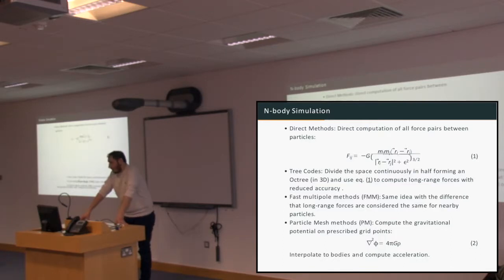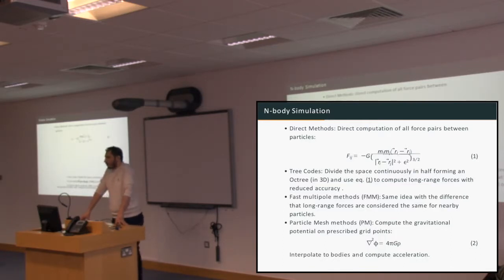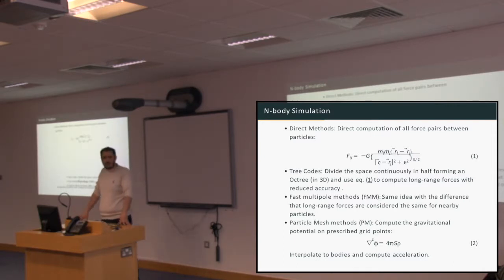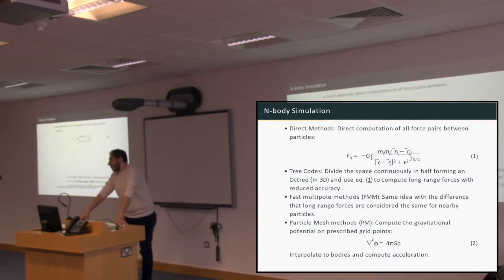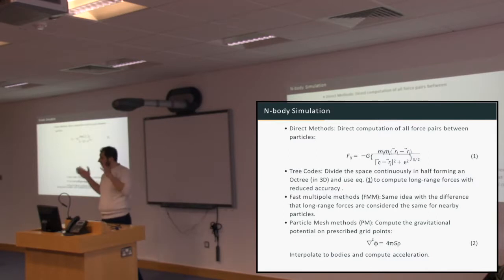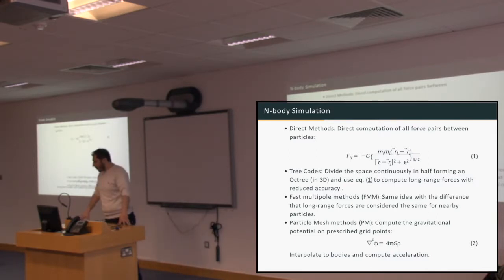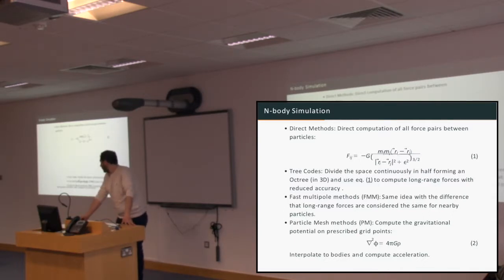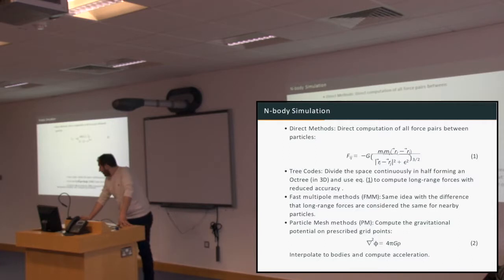The particle-mesh methods use another approach. They solve the gravitational equation, which is a Poisson-type partial differential equation, using either fast Fourier transforms or highly efficient multigrid methods, interpolate the gravitational potential, use it to compute the acceleration, integrate the equations of motion, and then proceed to the next time step. These methods are highly efficient with complexity O(N log N).